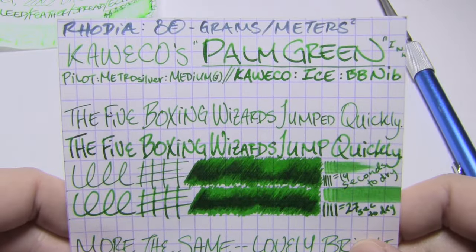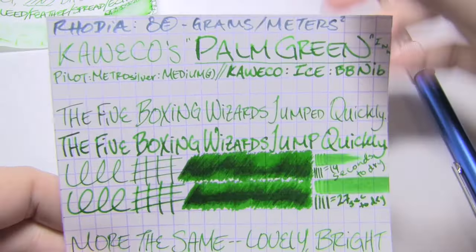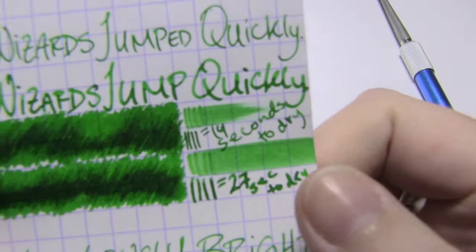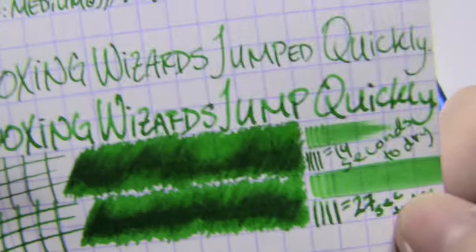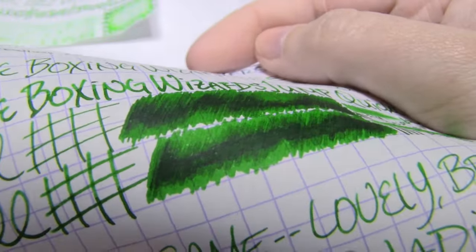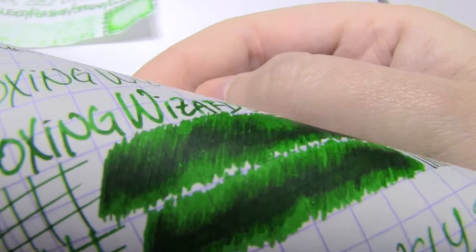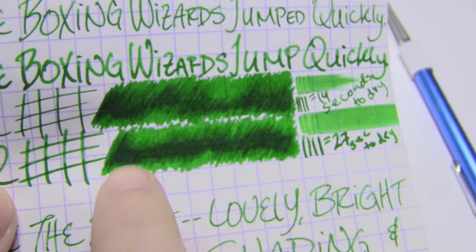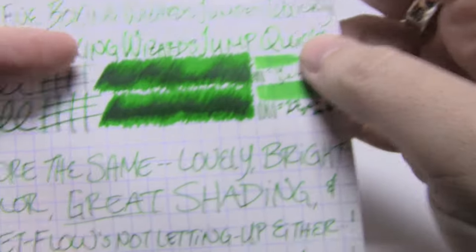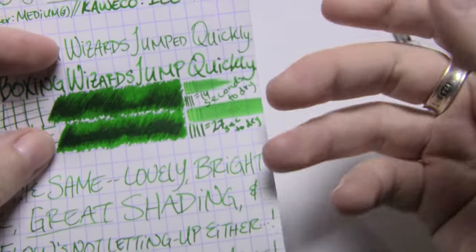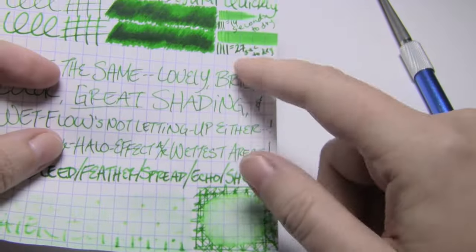Next up is Rhodia. 80 grams per square meter. Has ceramic coating added in the pressing process. Japanese medium, 14 seconds to dry. Double broad 27. Again, went through four blocks. Again, very intense shading. But not because of under saturation. Here is where we really see some sheen. We have some in the halo effects around the wettest parts. We have some really dark outlines here. That's sheen. That's red sheen. So there are slightly long dry times, but not unreasonable. Not for an ink that's wet flowing and this saturated on these premium papers.